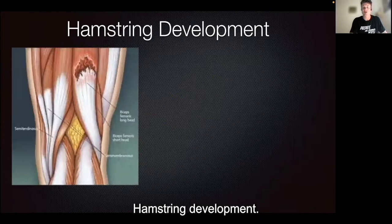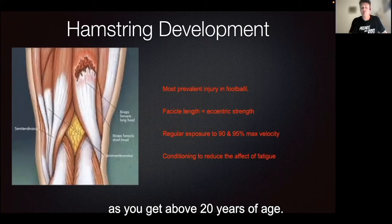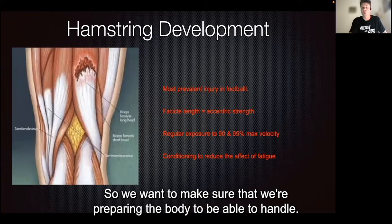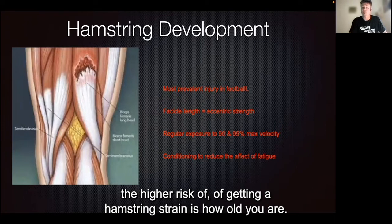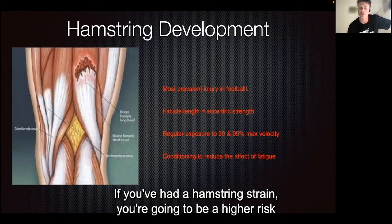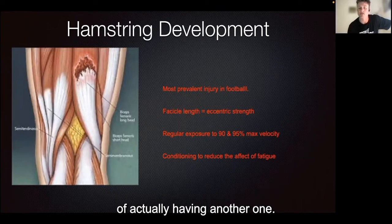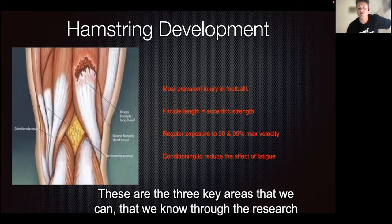The most common injury for a footballer is hamstring strains, particularly as you get above 20 years of age. We want to make sure we're preparing the body to handle that. It is the most prevalent, and the higher risk of getting a hamstring strain is related to how old you are — the older you get, the higher the risk. Also, if you've had a hamstring strain, you're at higher risk of having another one, so preventing it at all costs is most important.